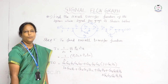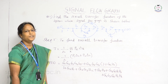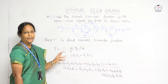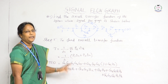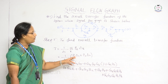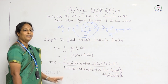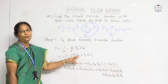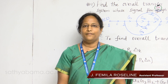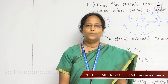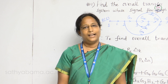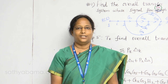The final step is to find the overall gain of the given system using Mason's gain formula: T(S) = (1/Δ) × Σk Pk Δk. With k = 2, this becomes (1/Δ)(P1Δ1 + P2Δ2). After substituting the values of P1, Δ1, P2, and Δ2, we get the final transfer function for the given signal flow graph. So far we have seen how to find the transfer function of the system using signal flow graph. In my next lecture I will explain how to find the transfer function using block diagram reduction technique. Thank you.